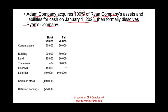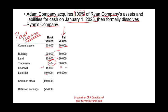Under the first scenario, we're going to assume that Adam paid $150,000 for this company. We have to find out how much the company is worth — and for that, we look at fair value. Current assets: book value and fair value are the same. Building: $90,000 on the books, but it has lost some value. Land has more value. They have a trademark on the books worth nothing, but the fair value is $30,000 — most likely they created it themselves. They also have goodwill of $15,000 on the books, but we don't use that for our computation. Liabilities are $40,000, and equity is common stock $110,000 plus retained earnings $25,000, totaling $135,000.